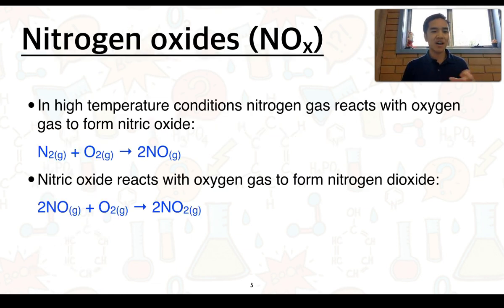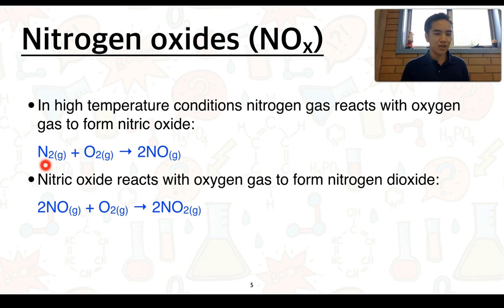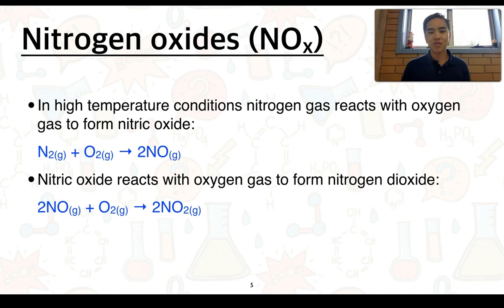In high energy or high temperature conditions, nitrogen can react with the second most abundant gas in the atmosphere, which is oxygen, and it can react in two stages. First, nitrogen gas N2 reacts with oxygen gas O2 to produce two molecules of nitric oxide, NO. Nitric oxide then reacts with oxygen gas to form nitrogen dioxide, NO2.